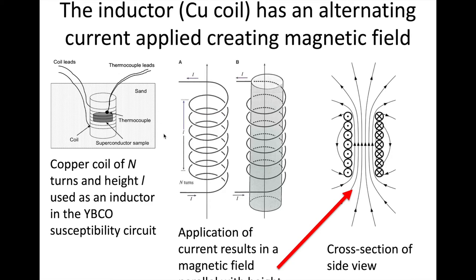That inductor — the copper coil — has an alternating current applied that creates a magnetic field. Our superconductor pellet is going to oppose that field below the critical temperature. If we make this measurement as a function of temperature, we should be able to find where that change in magnetic field occurs and use that to calculate critical temperature. When going through the magnetic susceptibility measurements and videos, you'll want to note the number of turns in the coil and also the height of the coil, as those factors go into calculating the magnetic field.